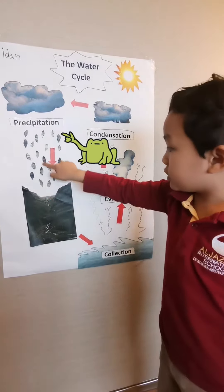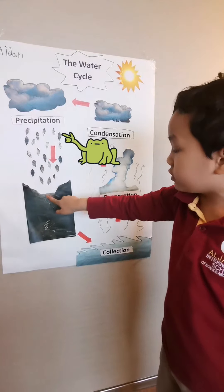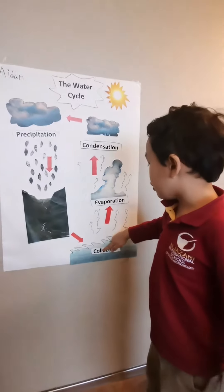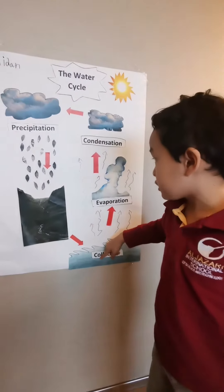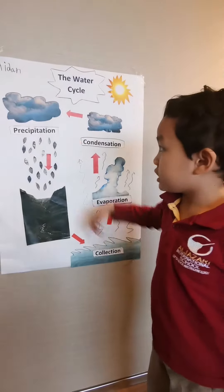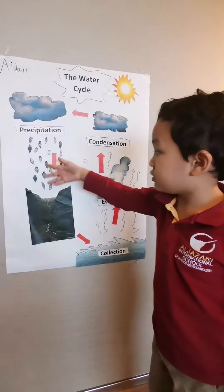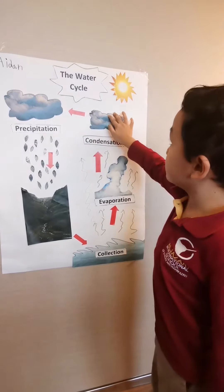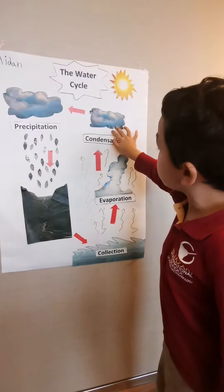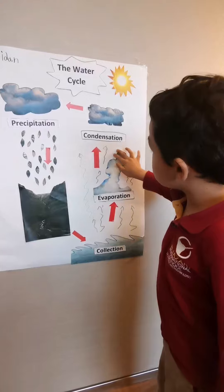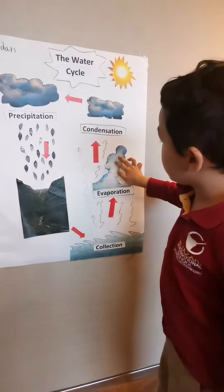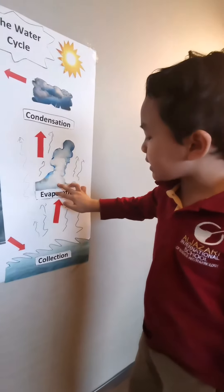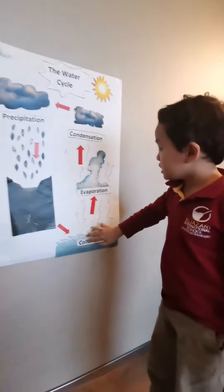Then it rains down the field and goes back to here. So just imagine you can see a real water cycle going fast, but we only normally see it quite slow.